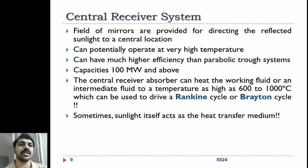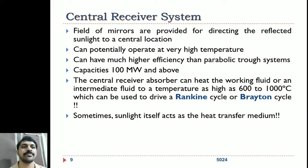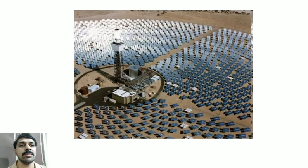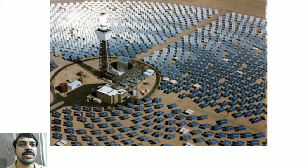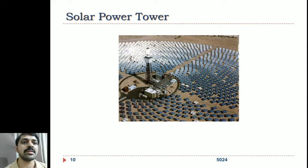The field of mirrors directs reflected sunlight to a central location. The central receiver can potentially operate at very high temperatures and at capacities of 100 megawatts and above. The absorber can heat the working fluid to temperatures as high as 1000 degrees Celsius, which can be used to drive a Rankine or Brayton cycle. Sometimes sunlight itself acts as the heat transfer medium. A photograph of a solar power tower shows the large number of mirror segments used. Large space requirements are a major disadvantage, but where space and initial investment are not concerns, megawatts of electricity can be generated.